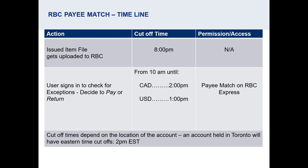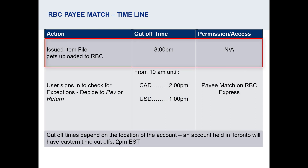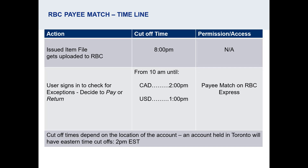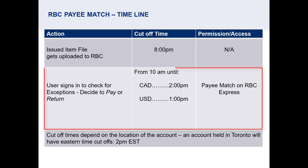There are two main parts to this service. The first is the upload of check details to RBC. This happens outside of RBC Express and will not be covered in this video. The other main part is making the decisions on items that are flagged as exceptions. In order to do this, a user must have access to RBC Express and permissions to Payee Match.